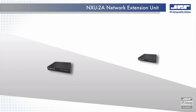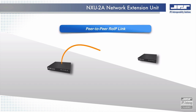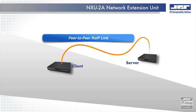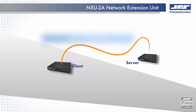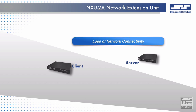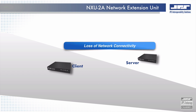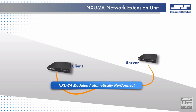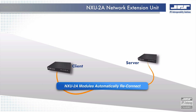The most common ROIP architecture is a peer-to-peer link where the NXU2A client module locates and connects to its designated server module for a robust and persistent connection. In the event of network failure, the client NXU2A module will continue to make repeated attempts to link with its designated NXU2A server module. Once the network is restored, the NXU2A modules will automatically link and re-establish the ROIP stream.